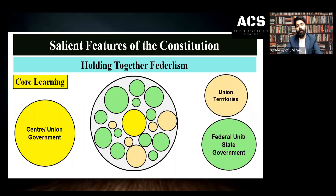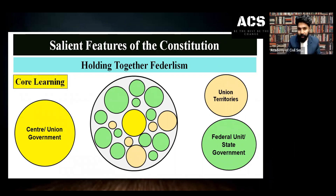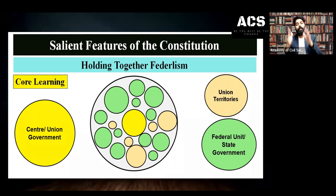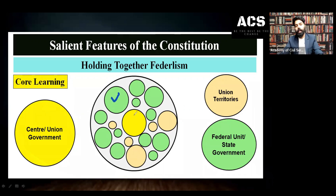When we come to Indian federalism, the illustration is entirely different from the US. Here you can see small circles, big circles, medium circles, and different colored circles. The green circles are the federal units, the yellow circle is the central government, and the yellow-shaded color represents union territories — states, center government, and union territories.